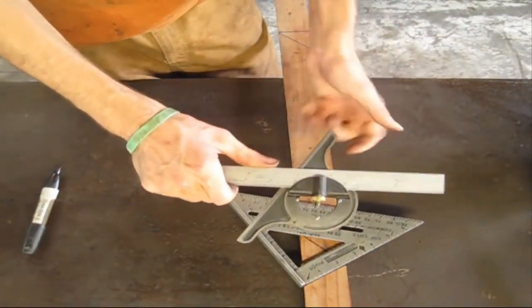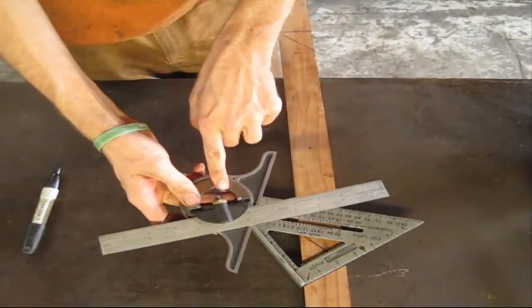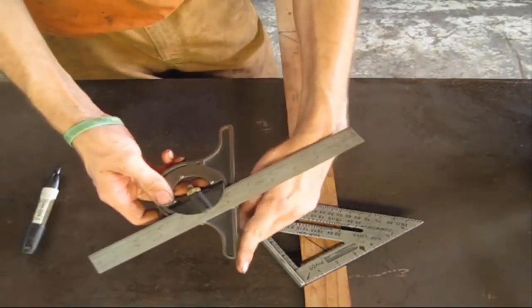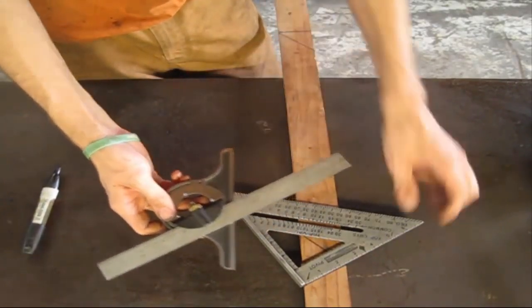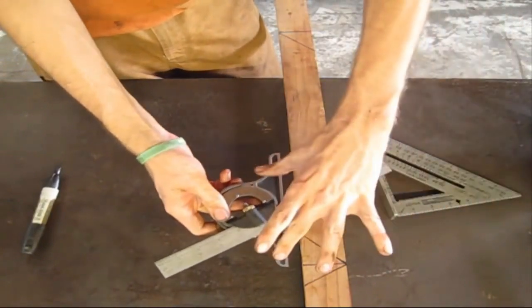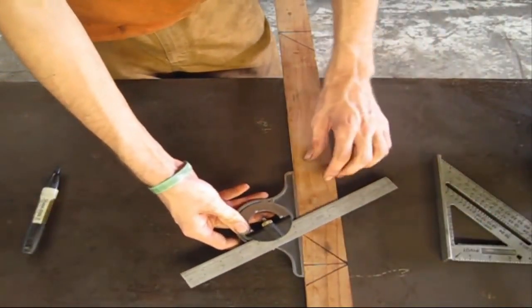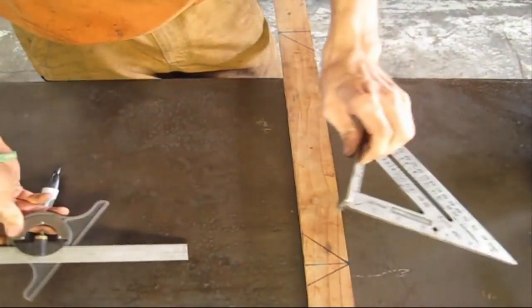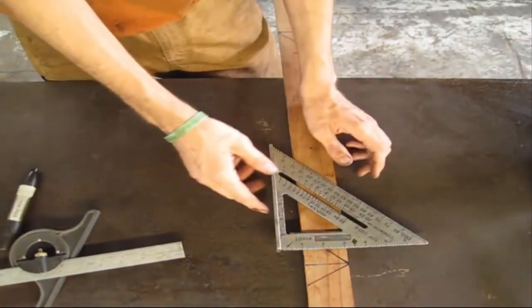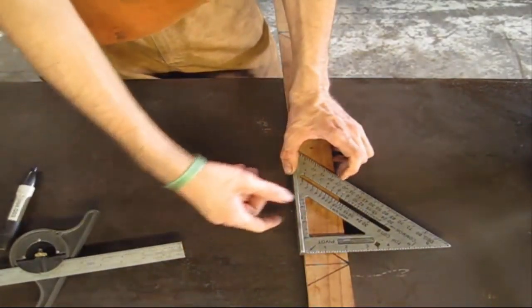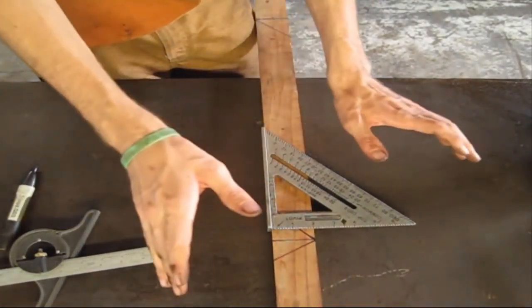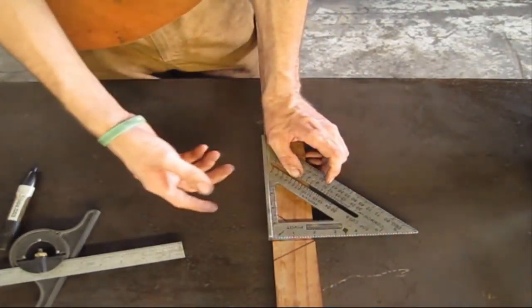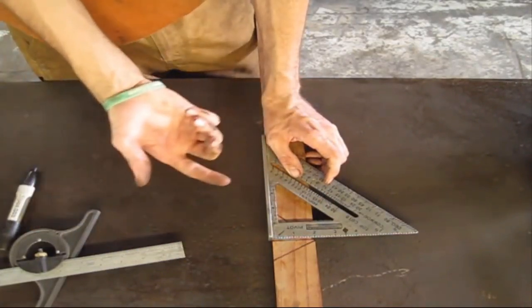The combination square is reading 60 degrees from a 180 degree line. This protractor is reading from this line. The speed square on the other hand is reading from square line. So it's going to be a difference of 90 degrees whether you add it or subtract it.